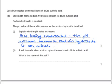A salt is made when sodium hydroxide reacts with dilute sulfuric acid. What's the name of this salt? The name of the salt comes from the name of the acid and the name of the alkali. Sulfuric acid always makes salts called sulfates. The first part of the name is going to come from the alkali. So in this case, the salt is going to be called sodium sulfate.